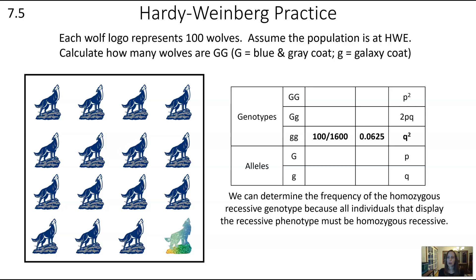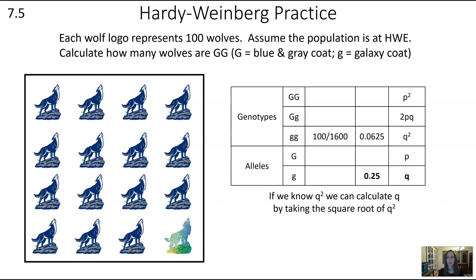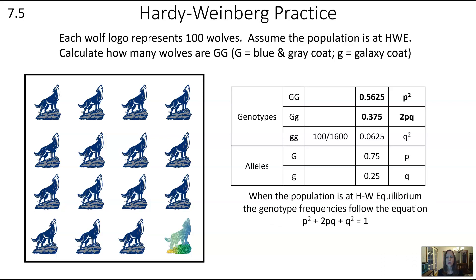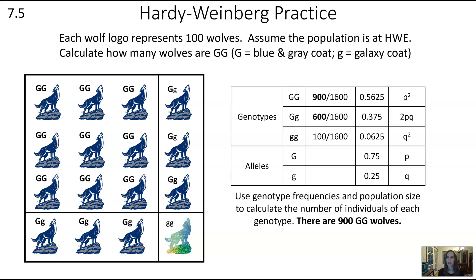Now that we have q squared, we take the square root to find q. After we find q, we subtract from 1 to get p. Now that we have both p and q, knowing the population is at Hardy-Weinberg equilibrium, we calculate p squared by taking 0.75 times 0.75, and 2pq by multiplying 2 times 0.75 times 0.25. To find how many of each type of wolf we have, we multiply by the population size of 1,600, and that gives us 900 wolves expressing the big G big G genotype.